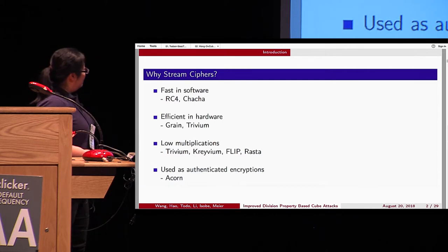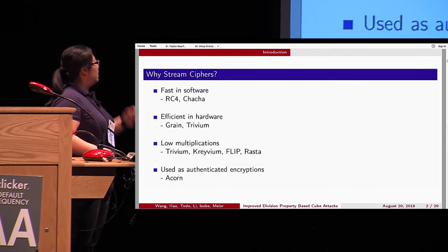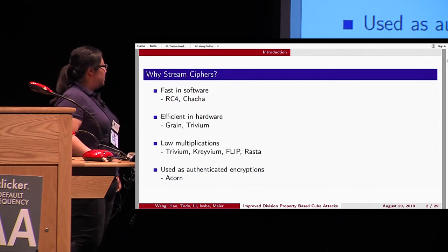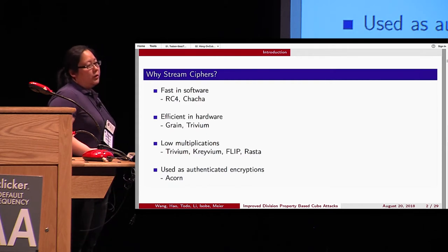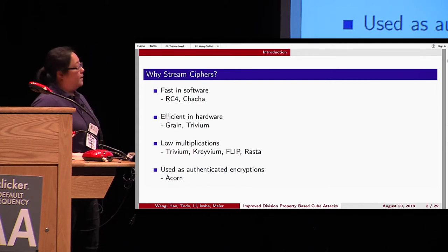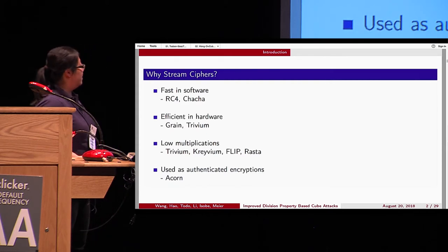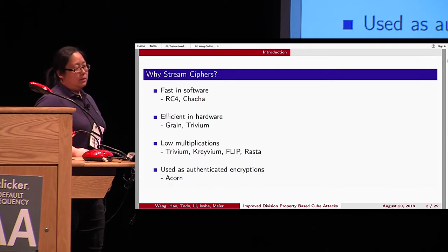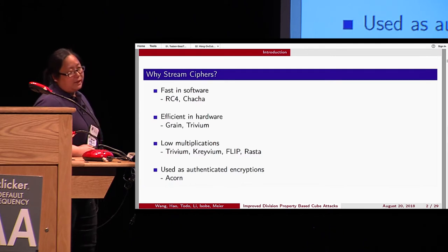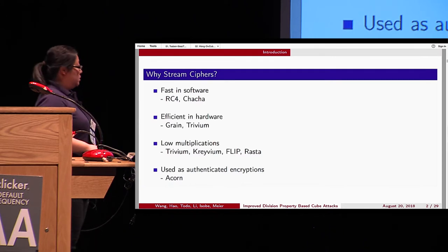The last application for stream ciphers is that they can also be used for authenticated encryptions. ACORN is one of the semi-finalists of the CAESAR competition, which we will also look at in this paper.